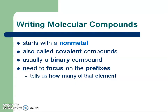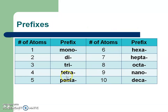Pause the video to fill in the blanks, then play to hear my words. When writing molecular or covalent compounds — those are one and the same — they always start with a nonmetal and end with a nonmetal. We're not going to worry about charges like we did for ionic compounds. Instead, the prefixes tell us how many of each element are in the compound — its composition. Pause the video to get the prefix list written in.